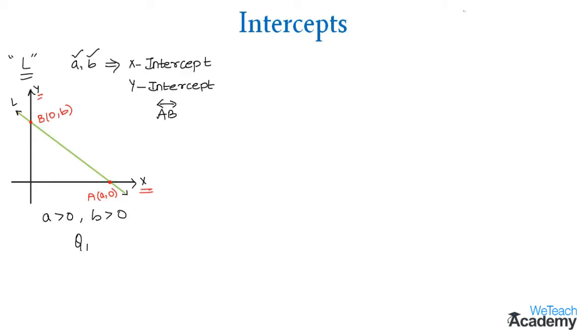And then coming to the second condition where the x-intercept A is less than 0 and the y-intercept B is greater than 0. Then in this case the line AB will be in this position and we can say that the line AB lies in quadrant 2.